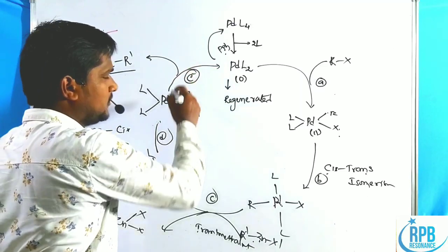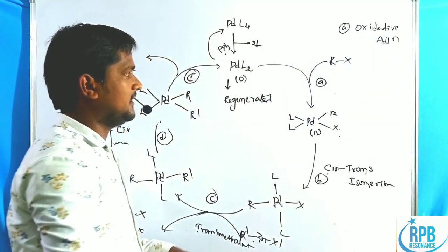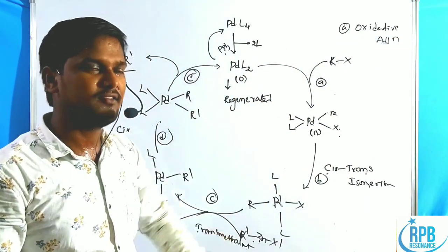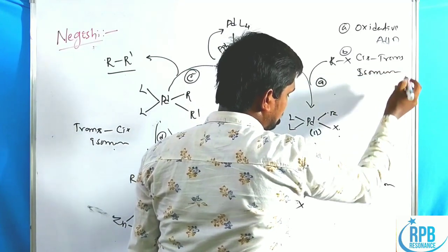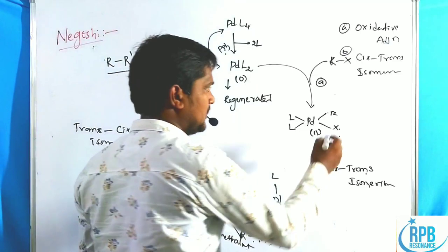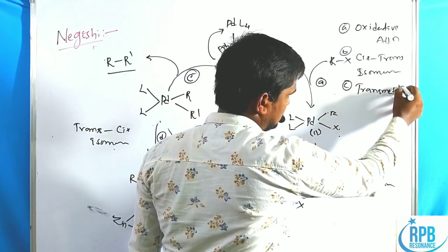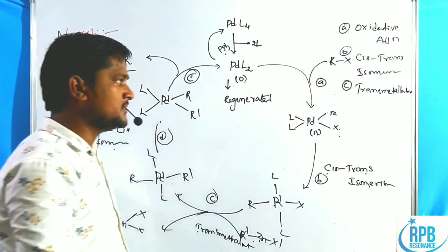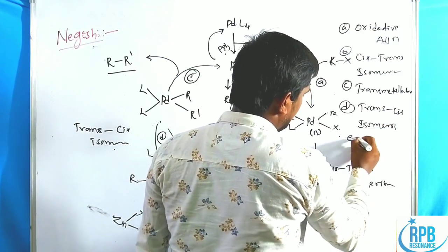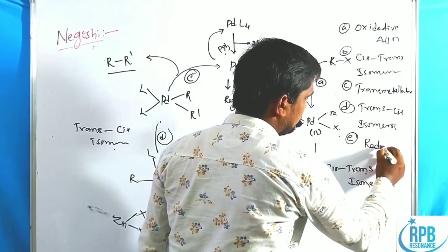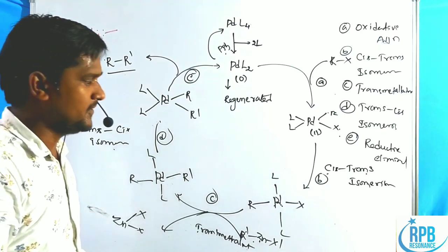Step 1 is oxidative addition, where the oxidation state and coordination number increase by two units. Step 2 is cis-to-trans isomerization, which speeds up the transmetalation step. Step 3 is transmetalation. Step 4 is trans-to-cis isomerization. Step 5, the final step, is reductive elimination. These five steps are involved in the Negishi cross-coupling reaction.